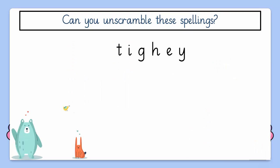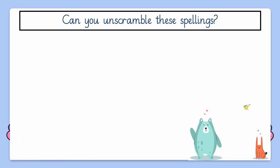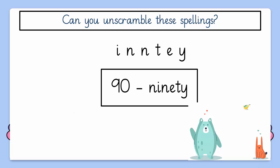Now can you unscramble these spellings and tell me which T number is this? Bravo! It's 80. E-I-G-H-T-Y, 80. Let's do another one. Can you unscramble these spellings and tell me which T number is this? Great job! It's 90. N-I-N-E-T-Y, 90.